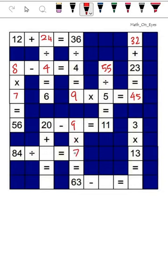84 divided by what is 7? 84 divided by 12 is 7. 20 plus 12 is 32. Then 3 multiplied by 13 is 39.